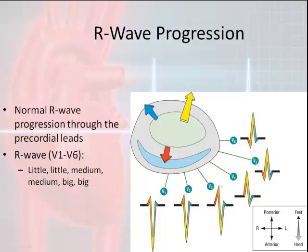Now let's discuss R wave progression through the precordial leads — a little different, but still simple. Most textbooks will tell you to look at V1 through V4, though some books include V5 and V6. When we talk about R wave progression, we're asking whether the QRS is primarily positive or primarily negative — we are not talking about the literal size of the R wave.